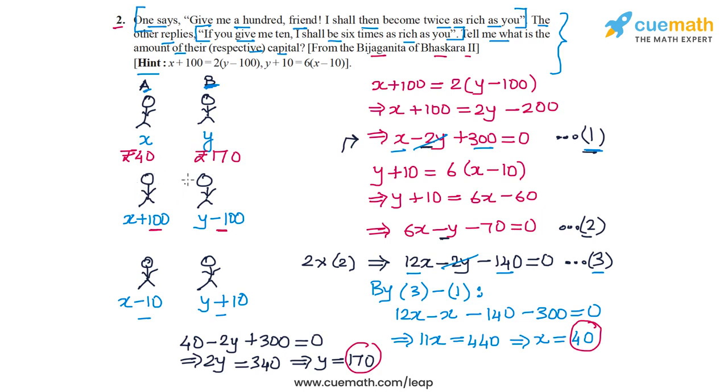If B gives Rs. 100 to A, A's capital will become Rs. 140 and B's capital will reduce to Rs. 70. We see that now A is twice as rich as B. On the other hand, if A gives Rs. 10 to B, then A's capital becomes Rs. 30 and B's capital becomes Rs. 180. Now we see that B is six times as rich as A. So in both cases, this aligns with what is told to us in the problem statement.